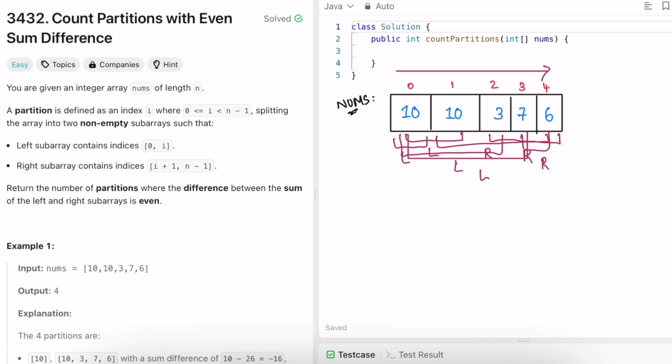So instead of doing these partitions, what we have to do is we can find the sum of the total array. So let's find the sum of the total array. I store it inside a variable total, which is initially 0. We keep iterating. First we take 10, next element is 10 again, next element is 3, next element is 7, next element is 6. So we do the sum of this, which is equal to 36. We have our total which is 36.